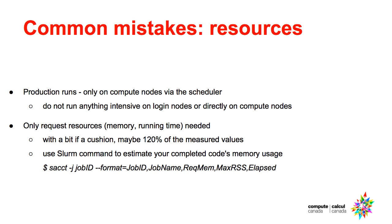The output will give you five columns listing the job ID, the job's name, the memory that you requested from SLURM in megabytes — either per node or per core — the maximum amount of memory used on any one node or any one core depending on the previous field, and the time it took to run your job.